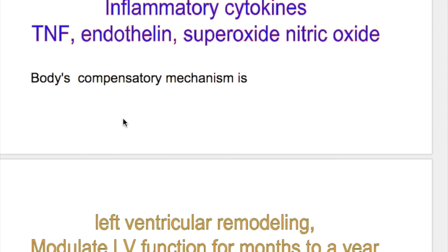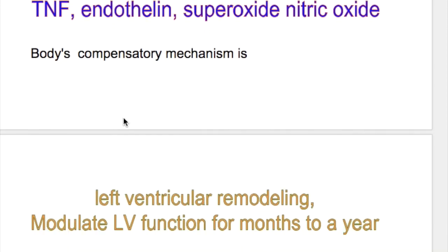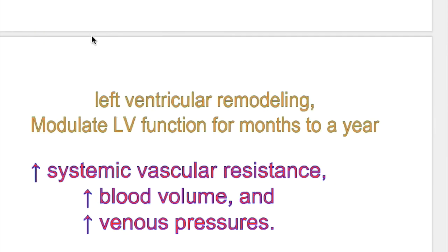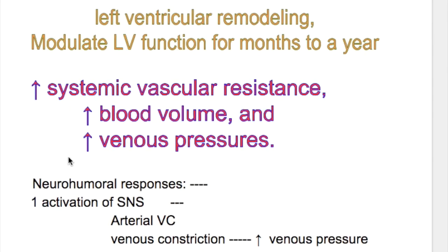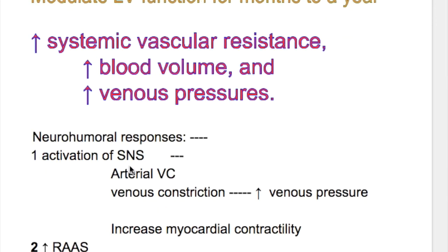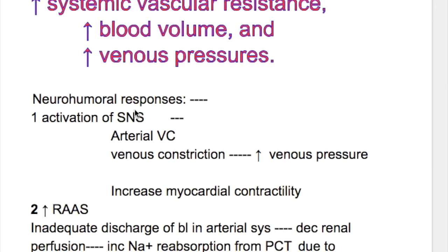The body's compensatory mechanism in heart failure is known as left ventricular remodeling, which modulates left ventricular function for months to a year. There are three important features: increased systemic vascular resistance, increased blood volume, and increase in venous pressure.